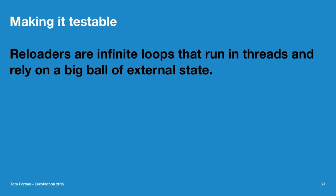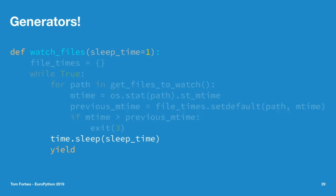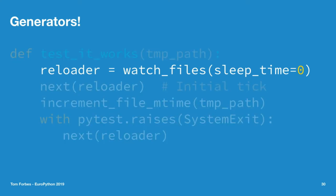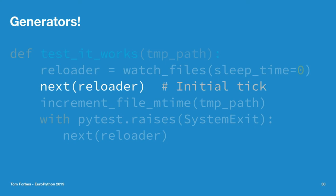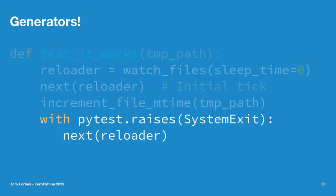The solution is to use generators. If we make our auto-reload implementation a generator, the only modification is adding a parameter for how long to sleep and yielding after each iteration of the loop. This lets you write better tests. In a simple test: create a reloader, call next() which does one tick of the loop, then it hits the yield and returns to the test. We fiddle with a file, then call next() again and it should exit with exit code 3. This lets you pause the auto-reloader, make file system changes, and resume it. You can extend this to test symbolic links, permission errors, intermittent files, etc.